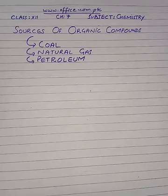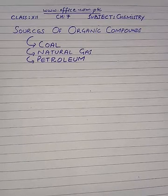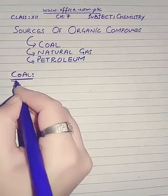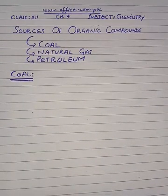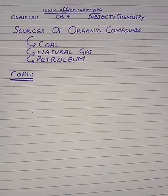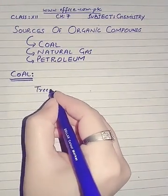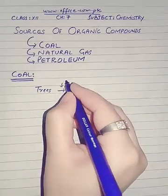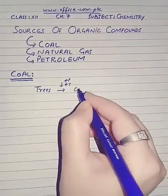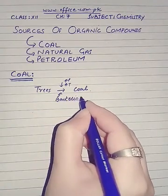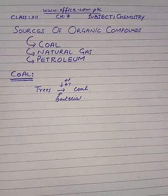Now first we will discuss coal. It is believed that coal in nature was formed from the remains of trees that were buried inside the earth's crust some 500 million years ago. Due to bacterial and chemical action, along with high pressure and high temperature, the wood was converted into coal. Bacterial decay also played a role in converting the tree or wood into coal.